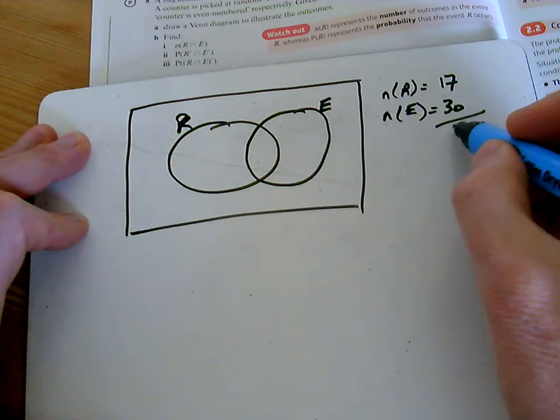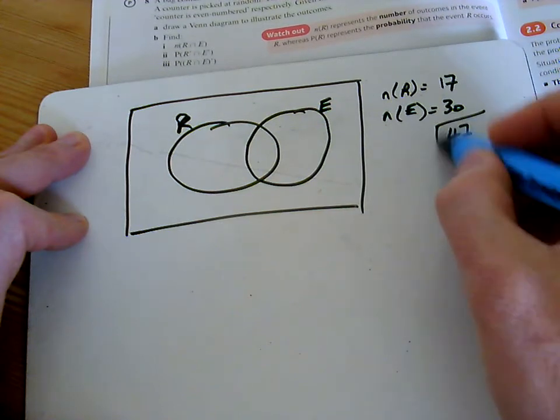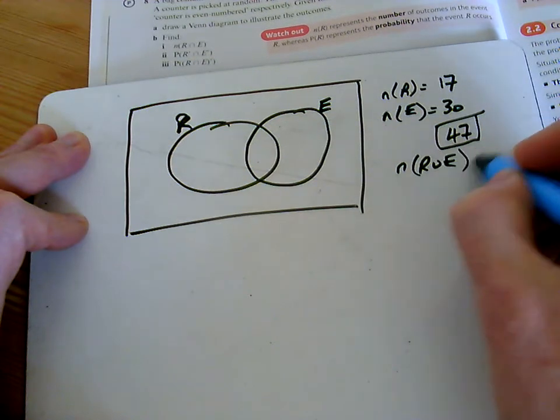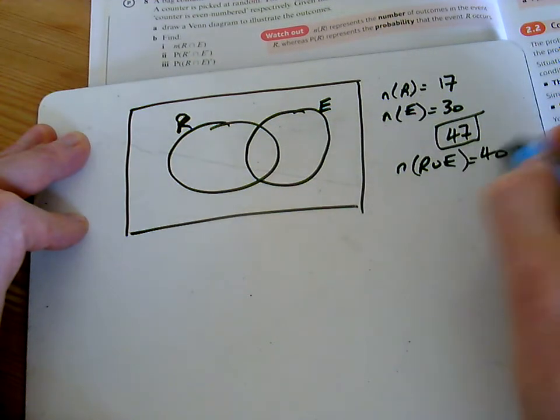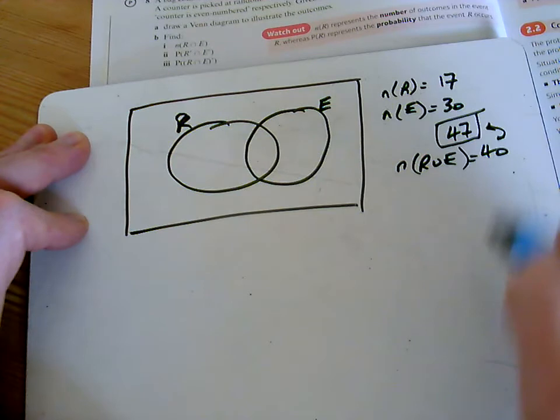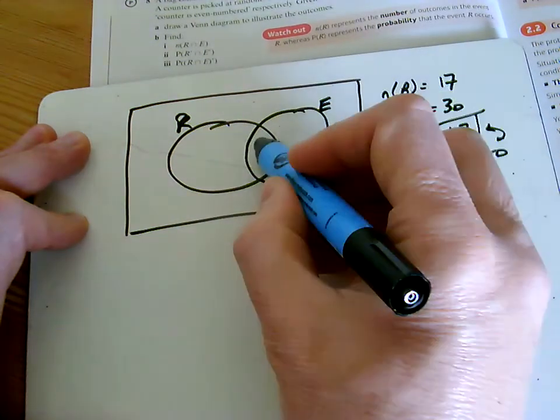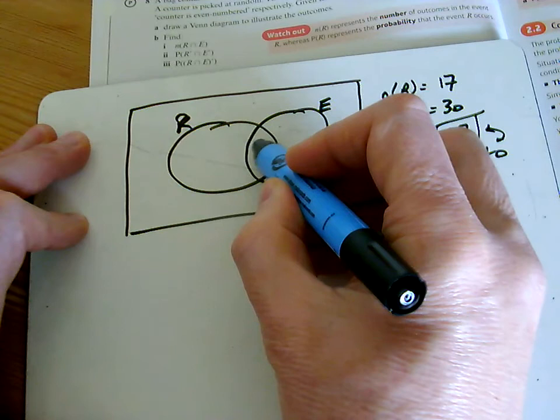You notice that adds up to 47, but they also tell you that the number in the union of those two things is only 40. Can you spot the difference there? The difference is 7. That means these 7 must be double counted. That means there must be a 7 in the middle there.